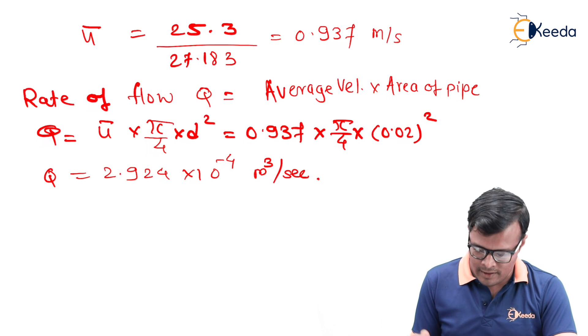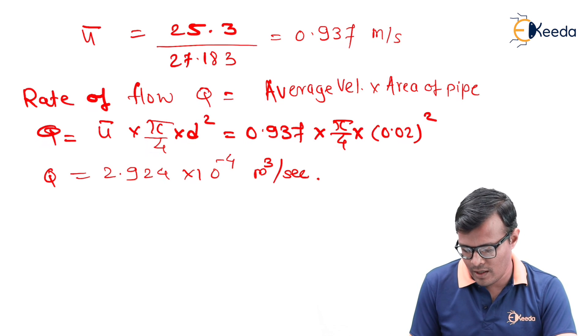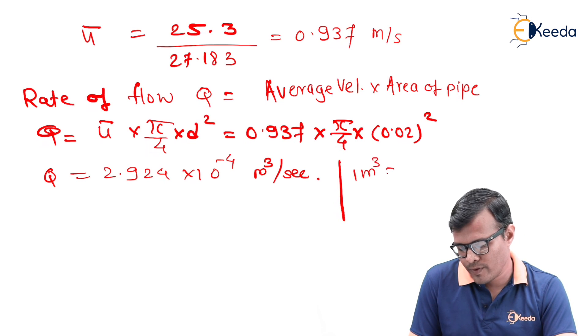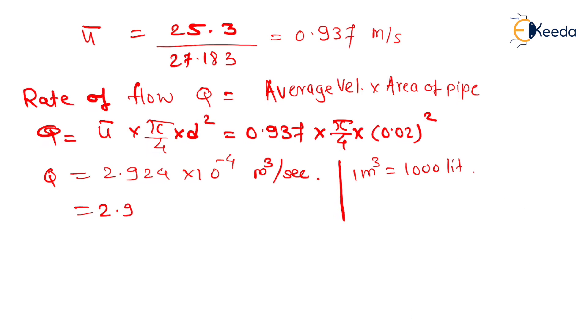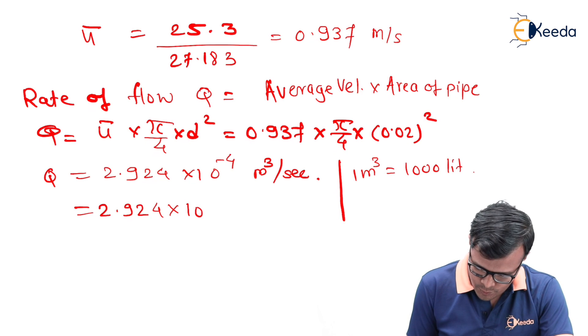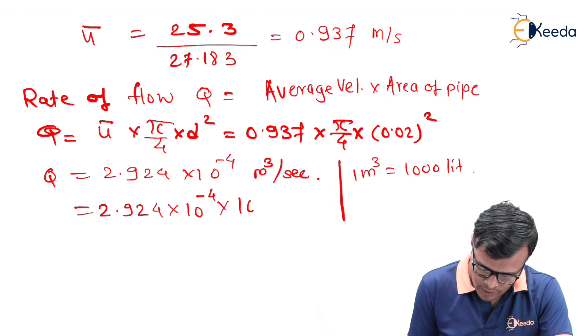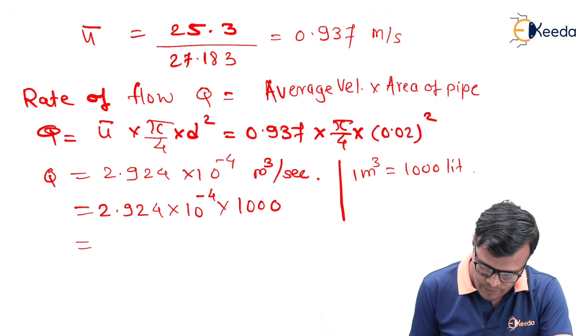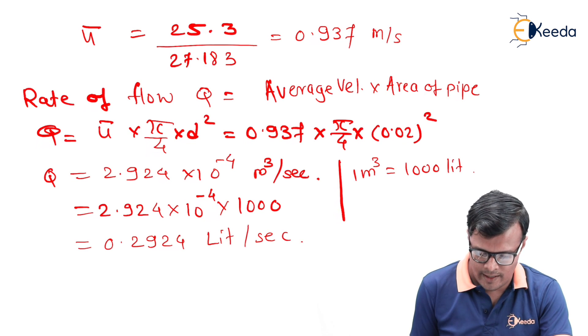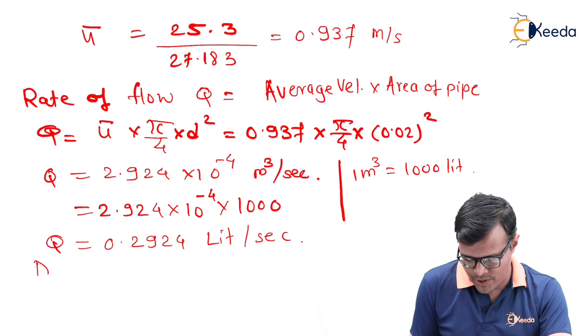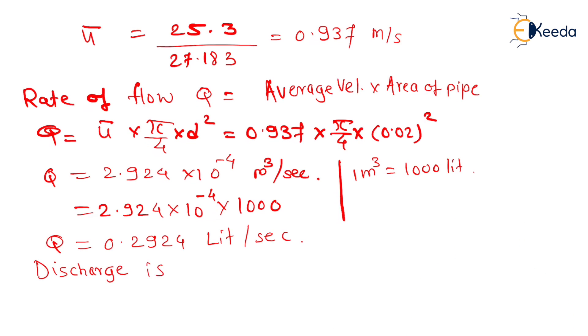If we want to convert it into our regular units, we will have a value of Q as 0.2924 liters per second. And we know that this discharge is in the upward direction. That's all, thank you.